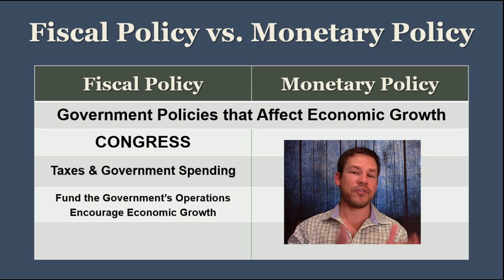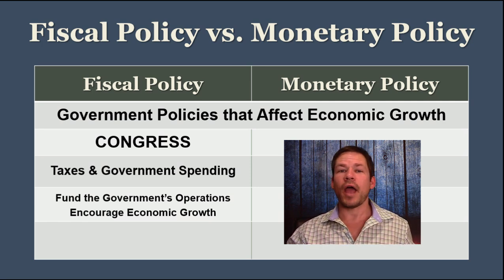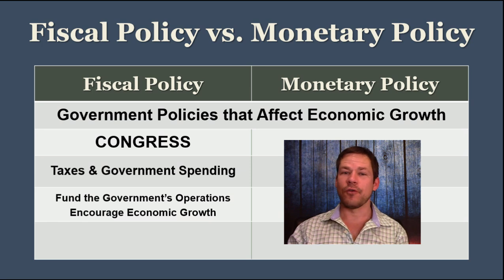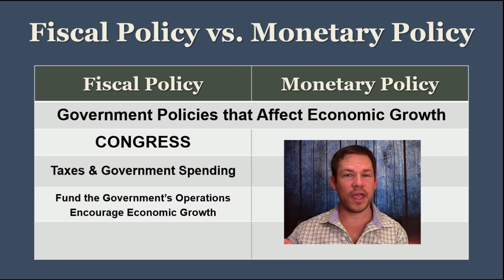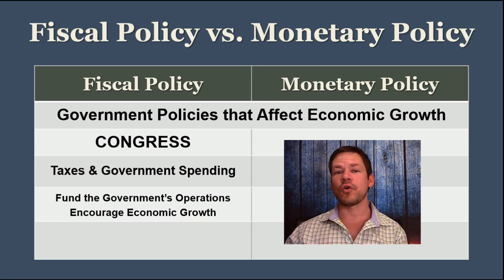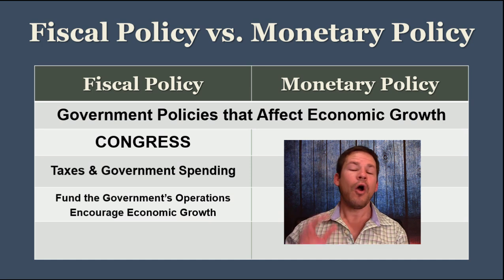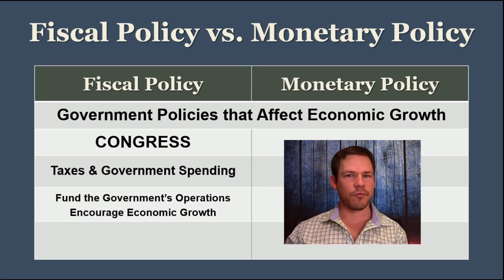That helps to fund the government, but Congress typically also tries to set fiscal policy with an eye for economic growth. For example, if taxes were too high, that's going to have an adverse effect on the economy. If the economy isn't doing so well and there is a recession, Congress could cut taxes to try to stimulate the private sector, or they could increase spending in order to try to stimulate the economy through government spending.